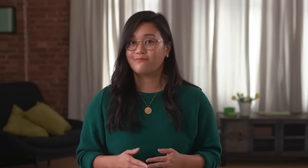So how do we actually turn this information into a goal statement? The goal statement should be just one or two sentences, describing both the product and its benefits for the user. Our goal statement might be: help users with pets find and schedule dog walkers quickly and easily. If you didn't create a problem statement, you can also pull the who from the persona, the what from the user story, and the why from the empathy map and user journey maps.